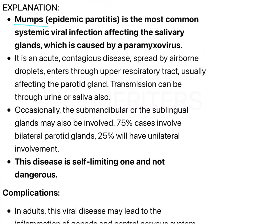Mumps, also known as epidemic parotitis, is the most common systemic viral infection affecting the salivary gland, caused by the paramyxovirus. Occasionally, the submandibular or sublingual glands may also be involved, but in almost 75 percent of cases the parotid glands are affected. Most commonly it is bilateral, but unilateral involvement can also occur.